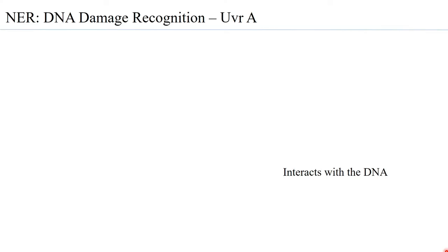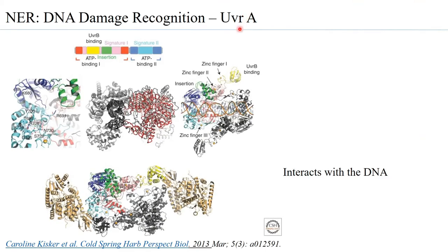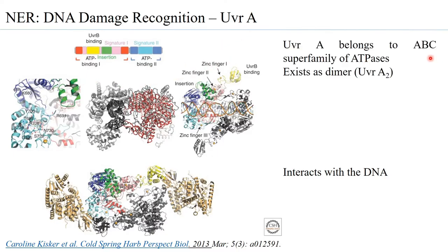Looking at NER DNA damage recognition by the UVR-A molecule: UVR-A interacts with the DNA, and without domains that can interact with DNA, its role in damage recognition does not happen. UVR-A is the first of the four UVR molecules involved in the NER mechanism. UVR-A is present as a dimer and belongs to the ABC — the ATP binding cassette — superfamily of ATPases. In the monomer structure, there are domains at both the N-terminal and C-terminal ends, both having nucleotide binding domains where ATP can bind.